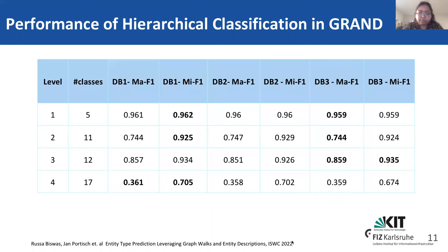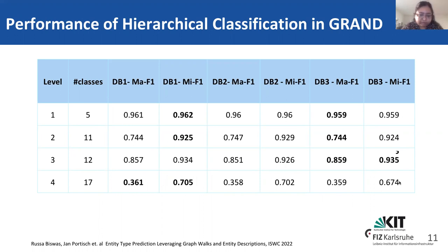As mentioned earlier, we have a level-wise classification. In the DBpedia dataset, there are four levels of hierarchy, and these are the classes at each level. As expected, the coarse-grained classification can be performed better than the fine-grained classification.